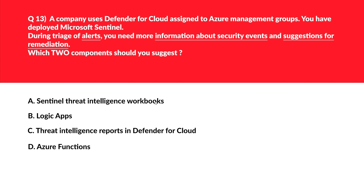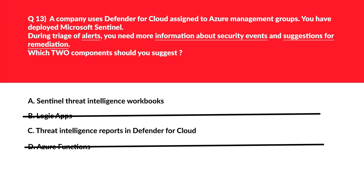The next question: Option A says Sentinel Threat Intelligence Workbooks — one of the most common uses is to develop alerting, which fits perfectly with the question about triaging alerts. We'll park this option. Options B and D — Logic Apps and Azure Functions — promote serverless architecture but are not related to security or remediation suggestions, so these are incorrect.